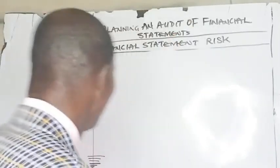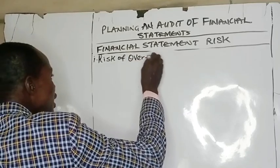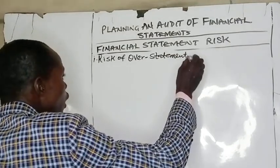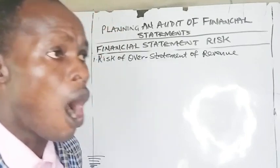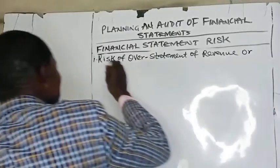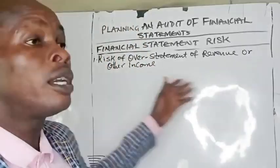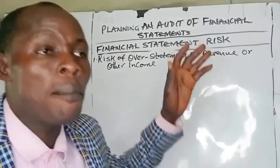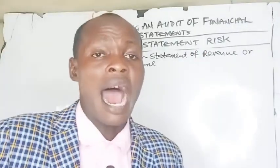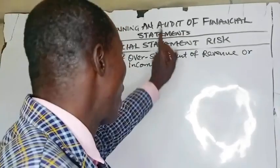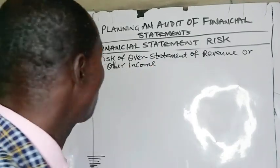Financial statement risks include: number one, risk of overstatement of revenue or other income. IFRS 15 requires that revenue should not be recognized until the performance obligations have been met — not when payment is received. You recognize revenue when the performance obligations are satisfied. If you fail to recognize revenue in accordance with IFRS 15, that poses a threat to the financial statement.